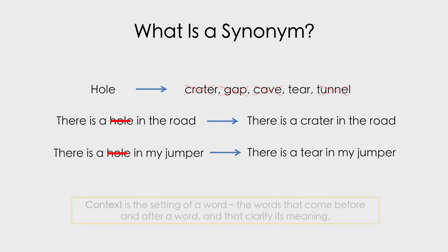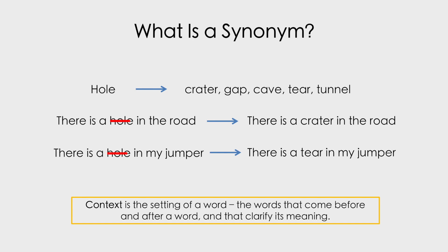So the context of a sentence is the setting of a word — the words that come before and after a word that clarify its meaning. Here, the really important parts of the sentence that clarified meaning for us were 'in the road' and 'in my jumper'.